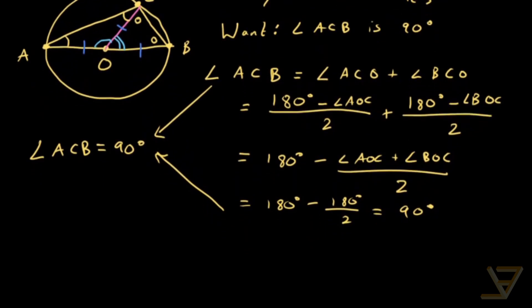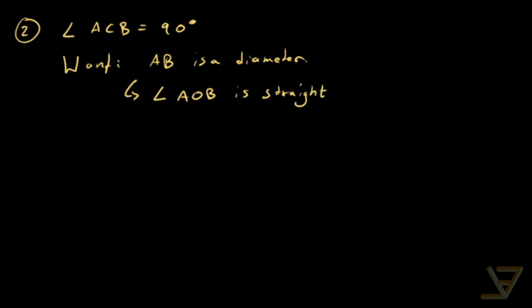Let's prove the second direction now. The second direction starts with the assumption that angle ACB is equal to 90 degrees. What we want is that AB is a diameter, and our strategy will be to show that angle AOB is straight. So we just want to show that angle AOB is 180 degrees.